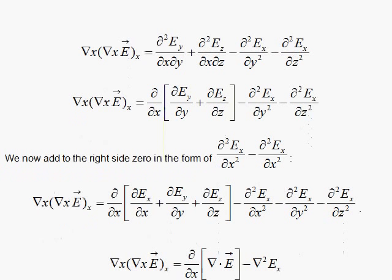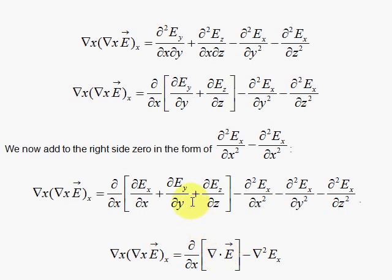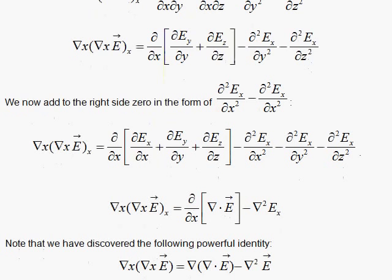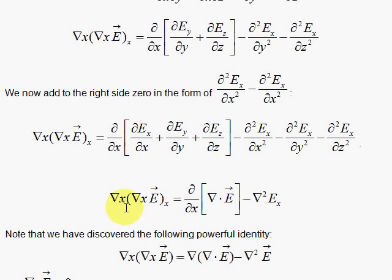Once we do that, we see that this result can be written as a derivative with respect to x, partial derivative of ∇·E. And this is minus ∇² of Ex. Now, we have derived here an important, powerful vector identity, a vector operator identity here that ∇×(∇×E) is equal to the gradient of ∇·E minus ∇²E in vector form. But we're not going to need this, although you're going to use it for homework and do this derivation for the magnetic field really fast.